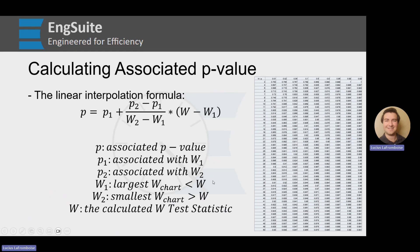The linear interpolation formula is: p equals p1 plus (p2 minus p1) over (w2 minus w1) times (w minus w1). Here, p is the associated p-value with our w — the calculated W test statistic. p1 is the associated p-value with w1, and p2 is the associated p-value with w2.